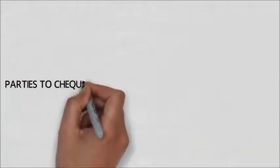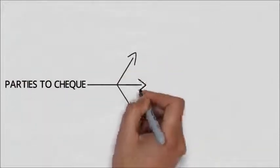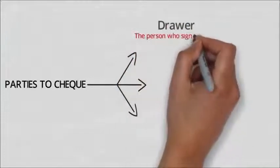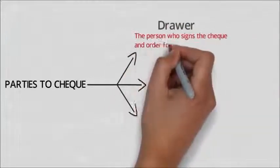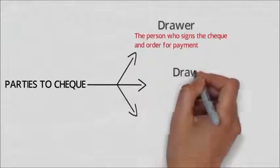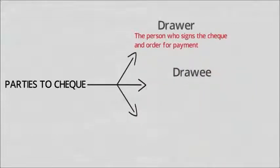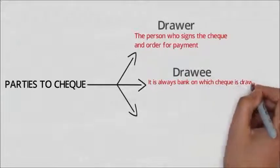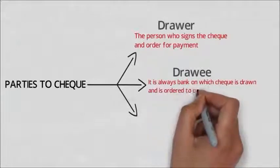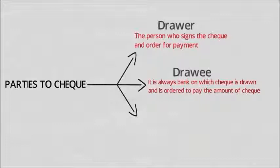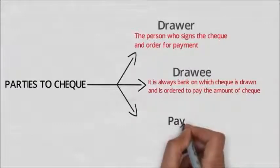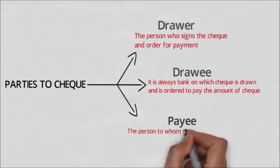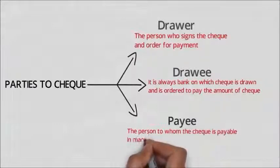There are basically three parties to the check. The first one is the drawer — a person who signs the check and orders the payment. The second one is the drawee, which is always the bank on which the check is drawn and is ordered to pay the certain amount mentioned on the check. The last one is the payee, to whom the check is payable.